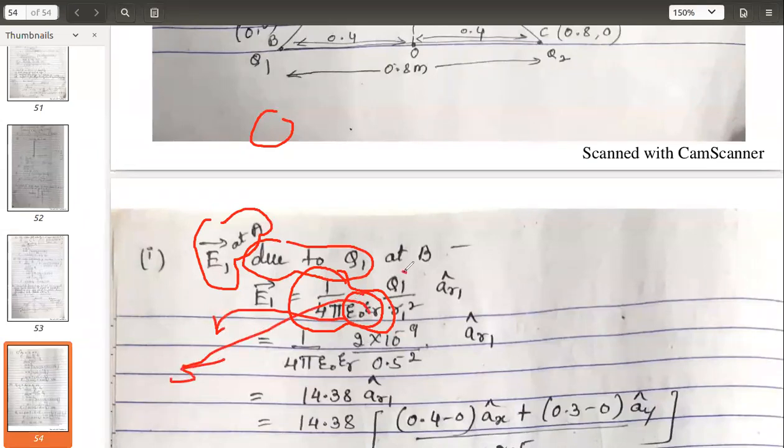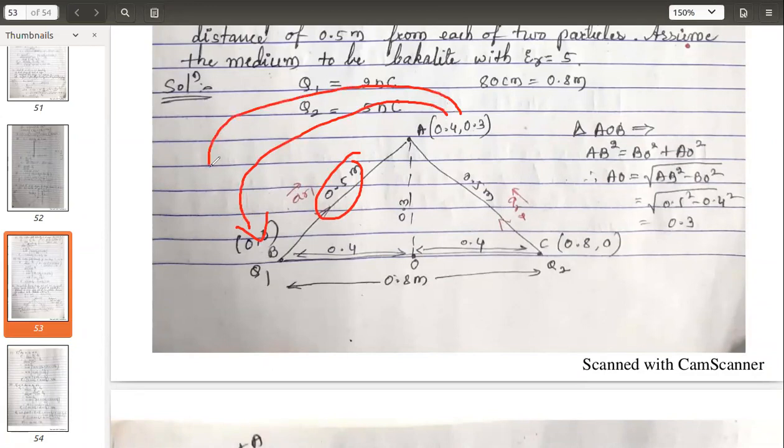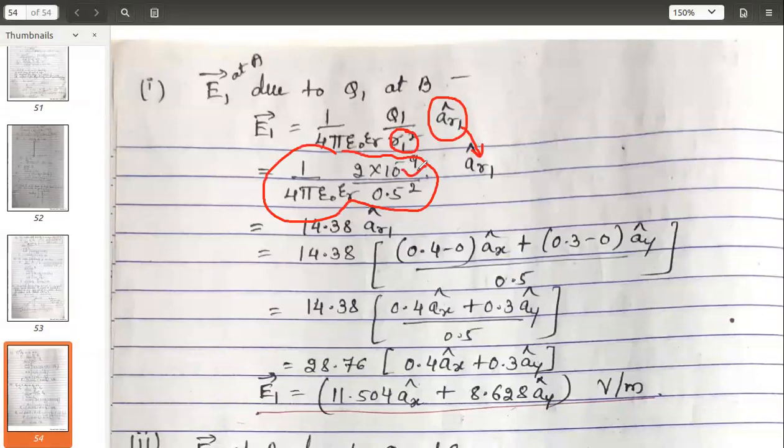The charge q1 divided by the distance squared. What is the distance squared? Distance given is 0.5 meters already, or you can even try with the distance formula. You will get the same: 0.4 squared plus 0.3 squared, square root gives you 0.5. So this is 0.5 squared times ar1. Let me keep it as it is at the end.